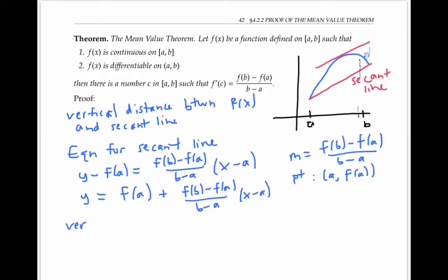And now the vertical distance between the function and the secant line is just f(x) minus the y values on the secant line. I'll call this vertical distance v(x). It's a function of x, which point in this interval you're calculating the vertical distance at.